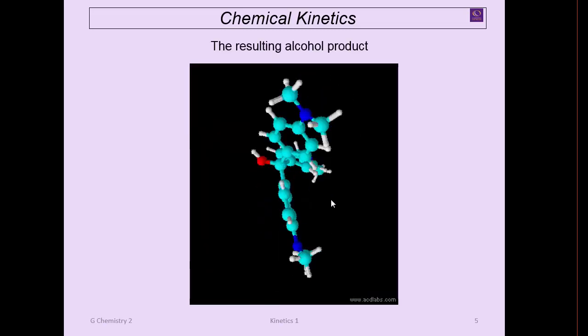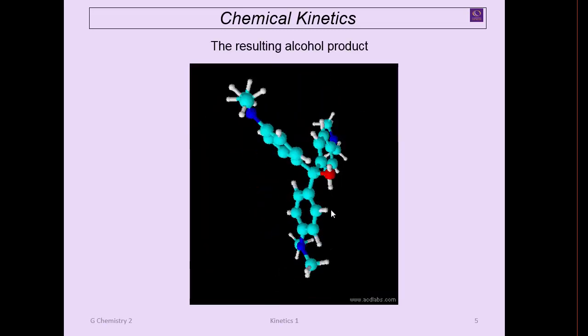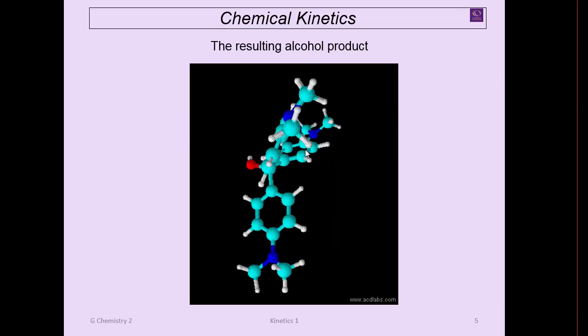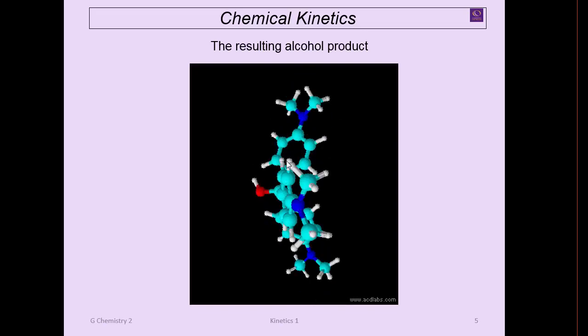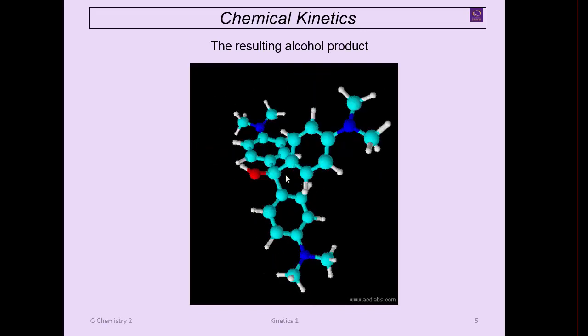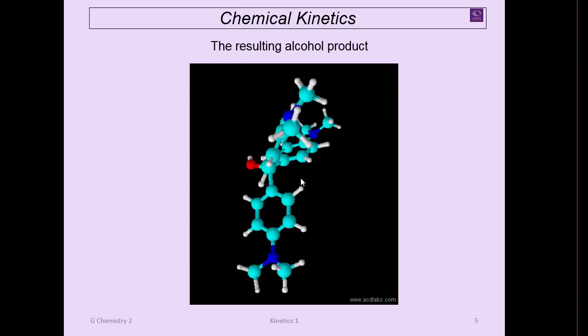Now I'm going to take that alcohol product and start rotating it around so you get an appreciation of the geometry. Those arms that before were fairly flat, now they're bent back. The hydroxide is on the other side, and all these angles are about 109.5 degrees.